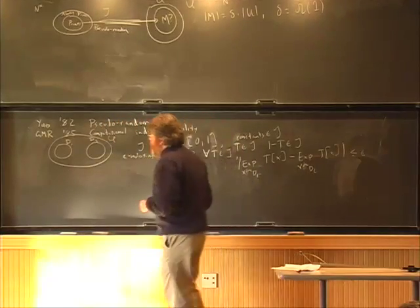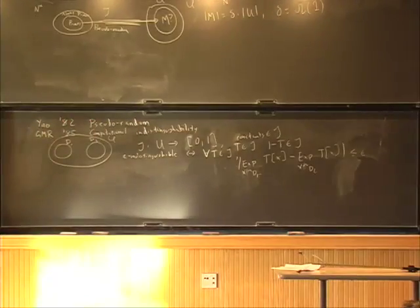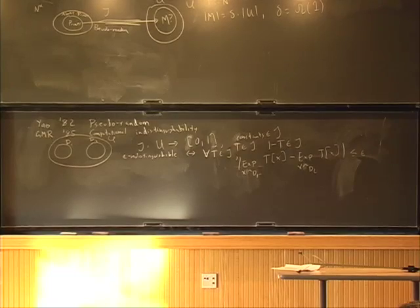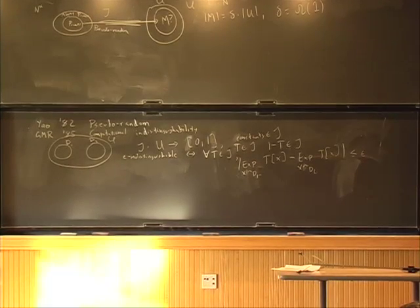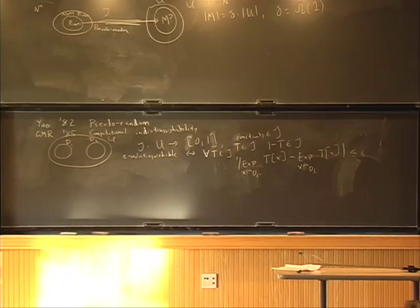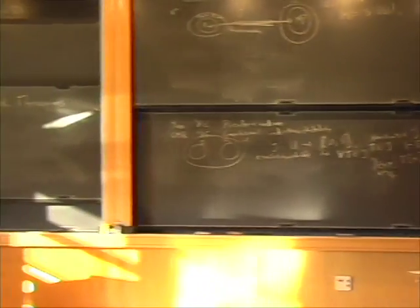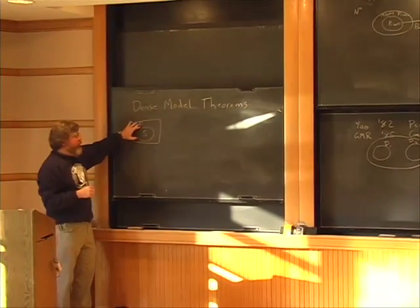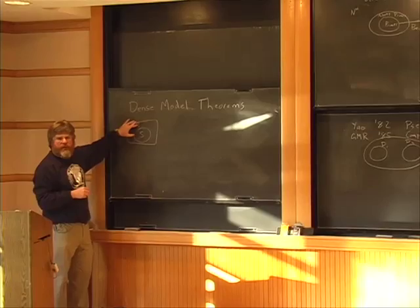Our goal is: we've got some set S. S is going to act like the primes in that picture—it's embedded in some superset R, but S is not too much smaller than R. When two distributions are epsilon-indistinguishable, I'll write that as D1 similar-sub-epsilon D2.